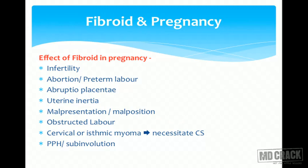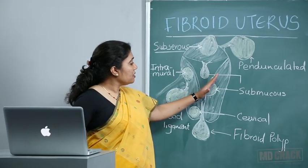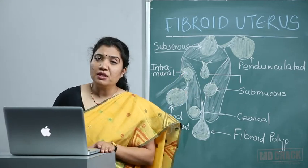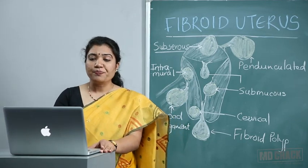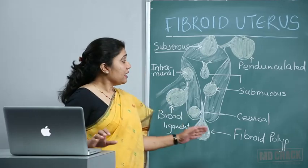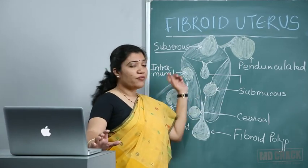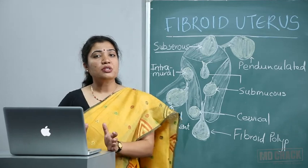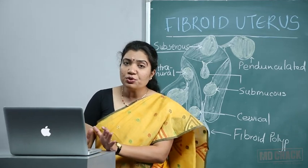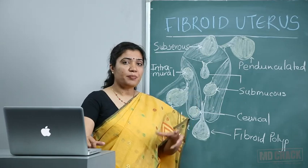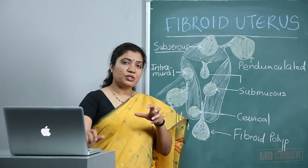Other effects of fibroid on pregnancy: it can lead to infertility, abortion, or preterm labor. There can be abruption of the placenta — if the placenta implants on a fibroid, the decidua is defective and the placenta may get prematurely separated during pregnancy. There can also be uterine inertia because in labor we want coordinated myometrial contraction, which can be incoordinated if there are multiple fibroids.